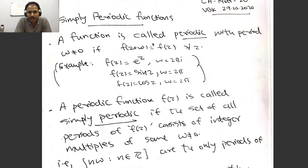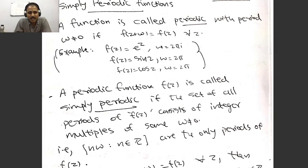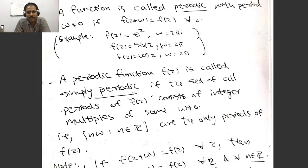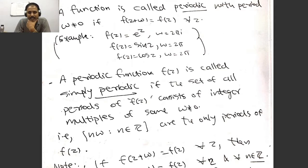We introduce elliptic functions in this video. We already know what a periodic function is. A simply periodic function has a non-zero period where all other periods are integer multiples of this period. It can be easily noticed that if omega is a period then any integer multiple is also a period. If these are the only periods, then we say the function is simply periodic.